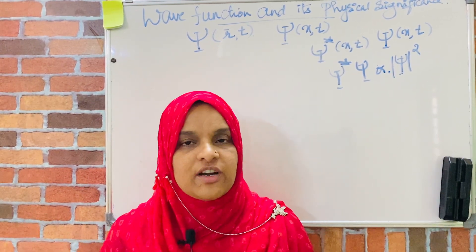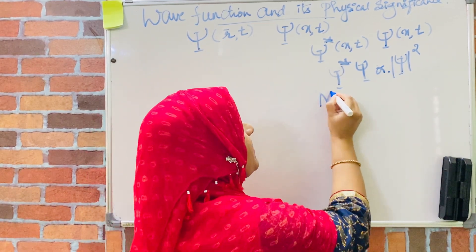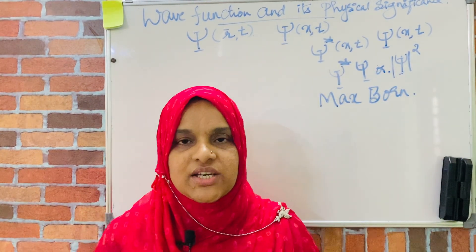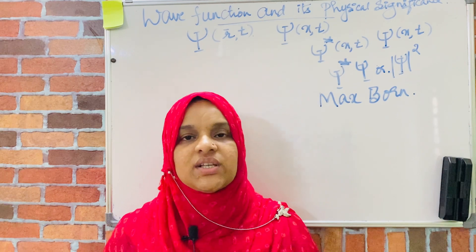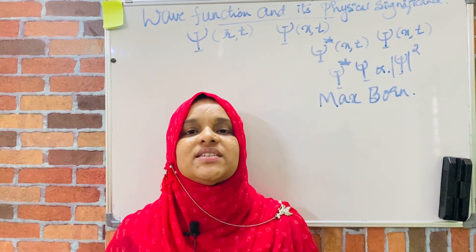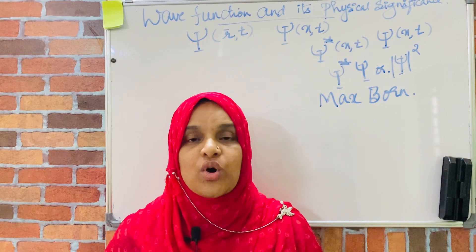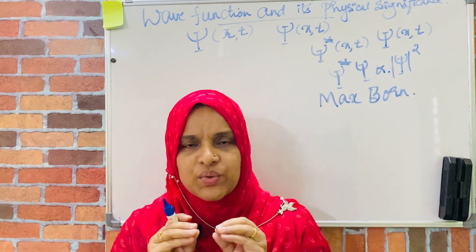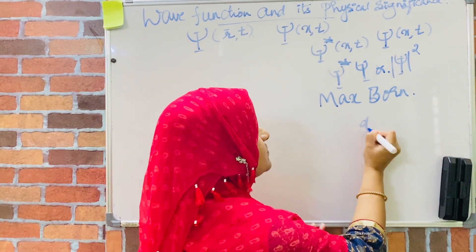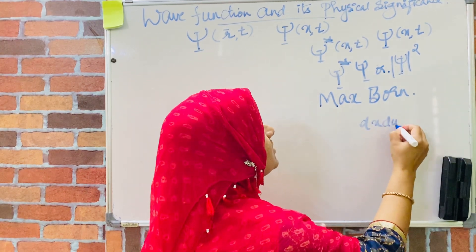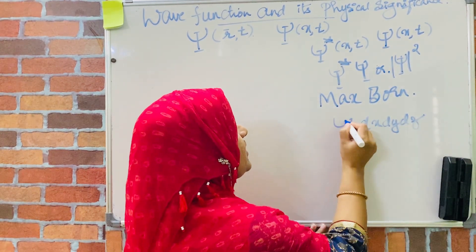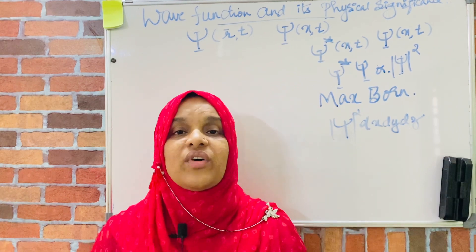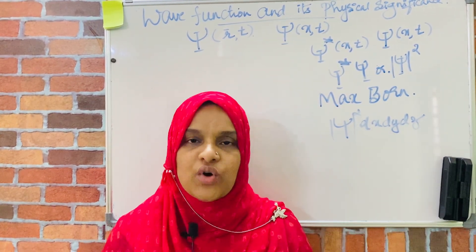This interpretation was given by Max Born and is known as the Max Born probability interpretation. That is, if psi is a wave function, then psi star psi or psi squared represents the probability density — the probability of finding the particle per unit volume. So if you have a small unit volume dx dy dz, then psi squared times dx dy dz represents the probability of finding the particle in that small volume.